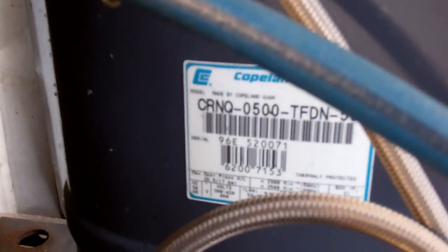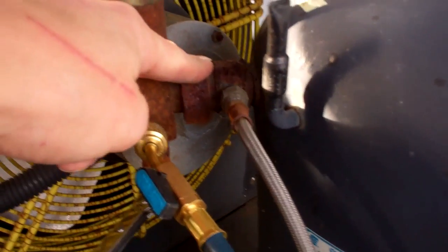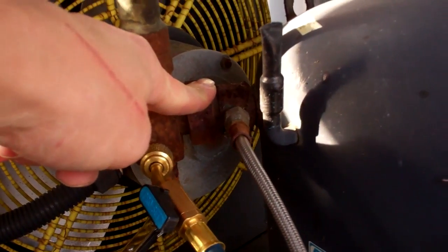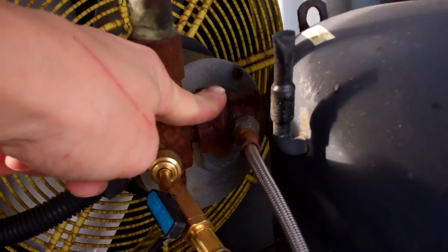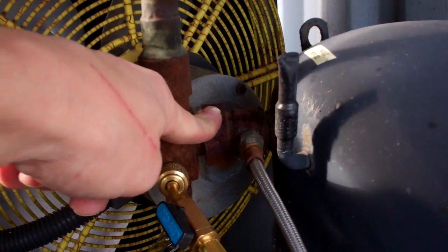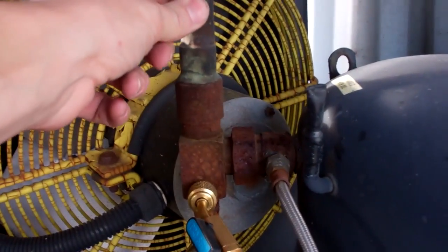These CRNQ compressors, some of them are obsolete. If you can get one, it comes out with stubs and not rotor locks. By the time you've put the adapters on, you've got to alter the pipework anyway.